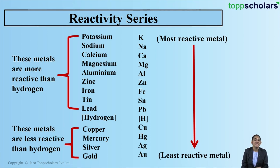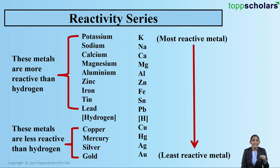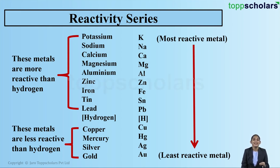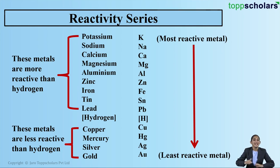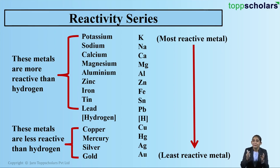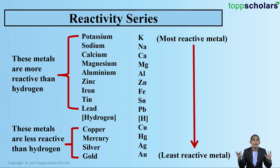The reactivity series is simply the arrangement of metals in an increasing or decreasing order of their reactivity. As we move from top to bottom in the reactivity series, the reactivity goes on decreasing, which means that the metals placed at the top are said to be highly reactive metals, whereas the metals placed at the bottom of the reactivity series are said to be less reactive metals.